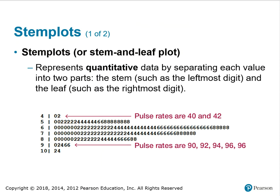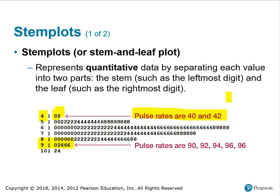Stem plots, or stem-and-leaf plots, represent quantitative data by separating each value into two parts: the stem, such as the leftmost digit, and the leaf, such as the rightmost digit. So in the first row, pulse rates of 40 and 42 are represented with a 4 and a vertical slash and then 0, 2. Typically, the leaves are arranged in numerical order. For example, one row would represent 90, 92, 94, 96, 96. You keep all of the data values from the original set.